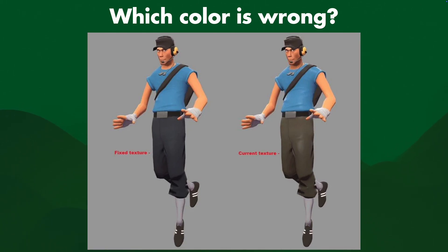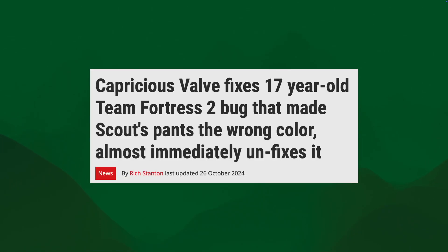It turns out the left one is the fixed texture — that's correct. The one on the right is the current texture, which is technically wrong — technically not the right color pants. Valve actually fixed this 17-year-old bug that made Scout's pants the wrong color, but they also immediately unfixed it. They went back to the wrong pants. Why'd they do that?